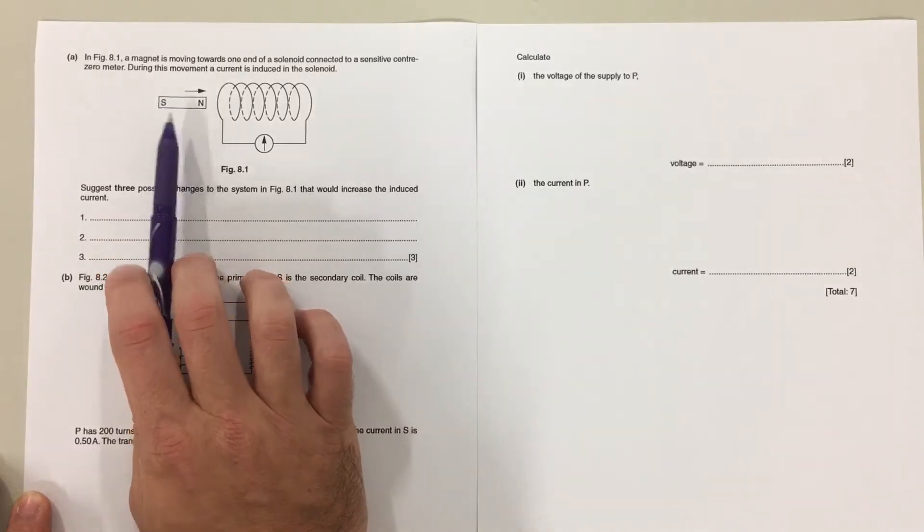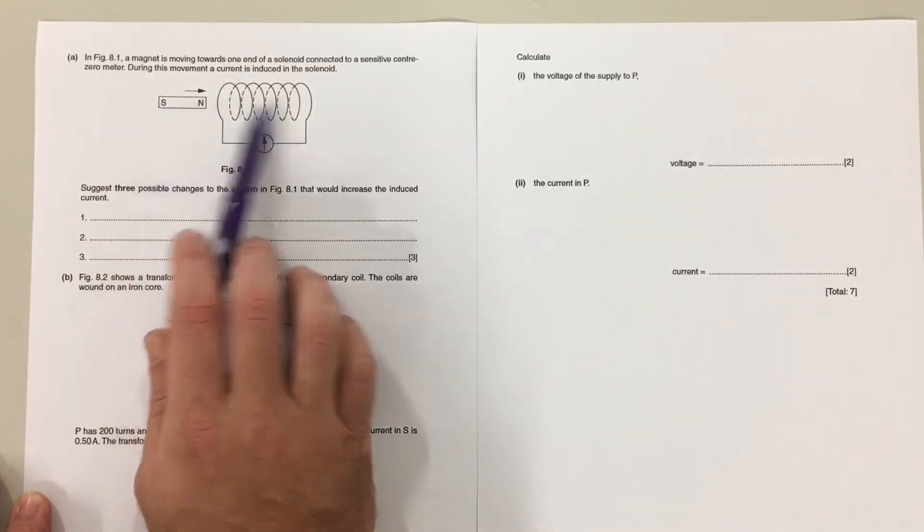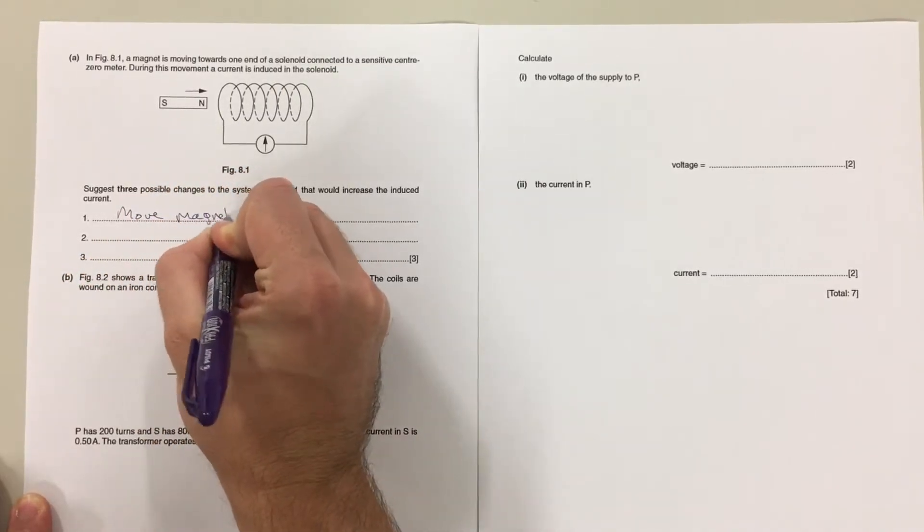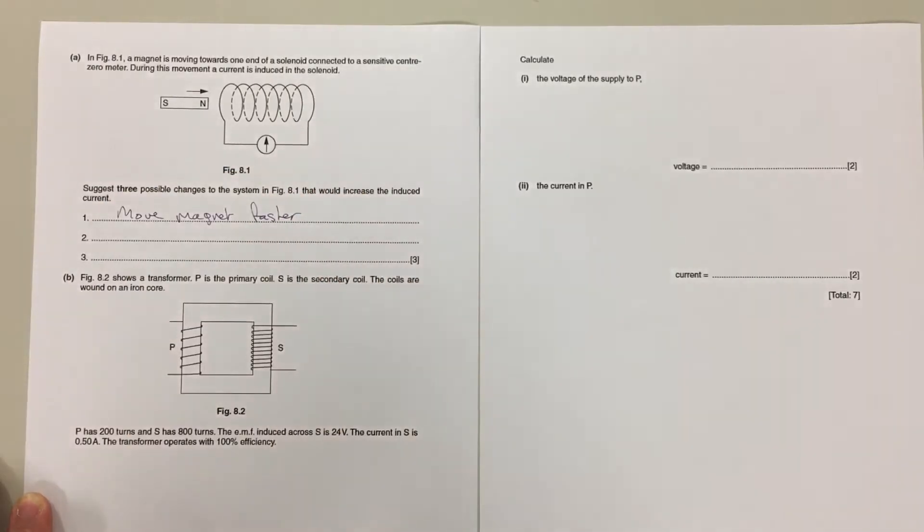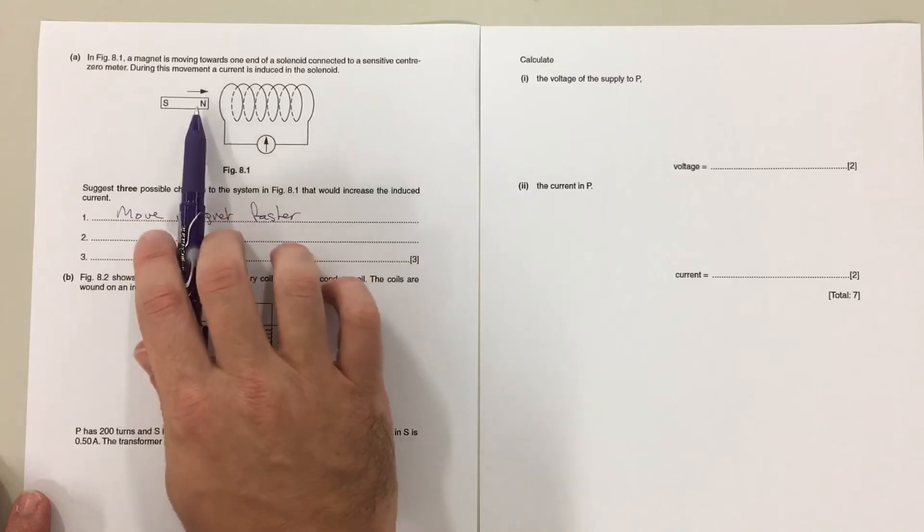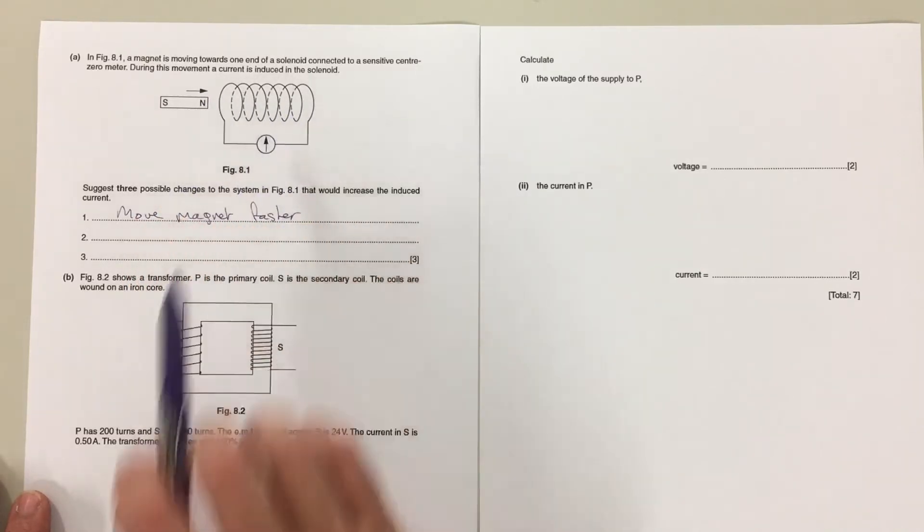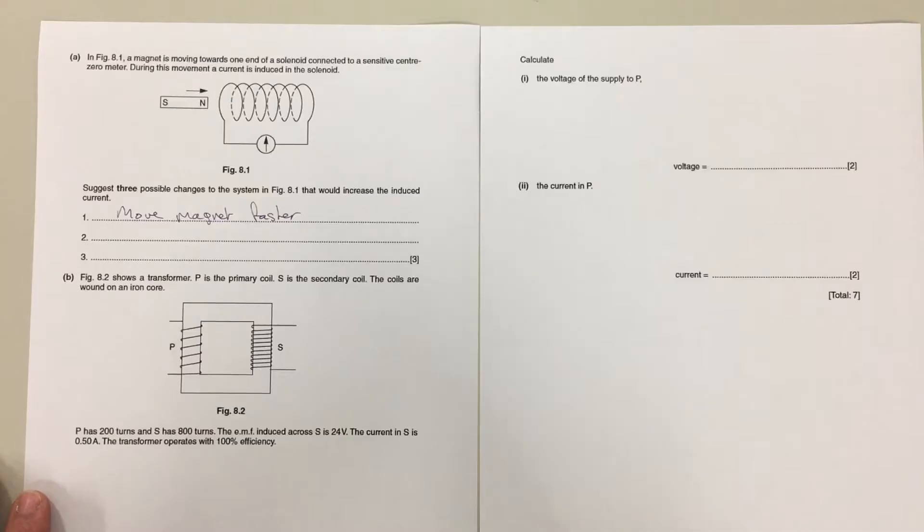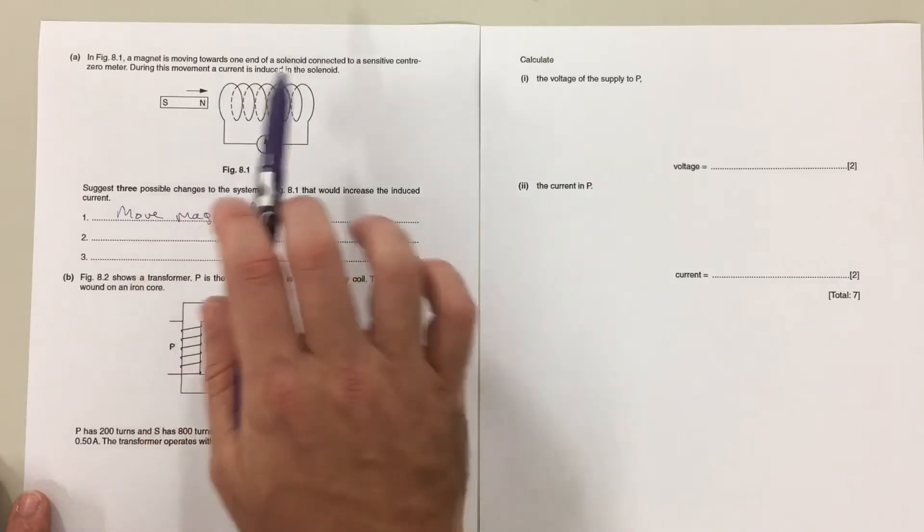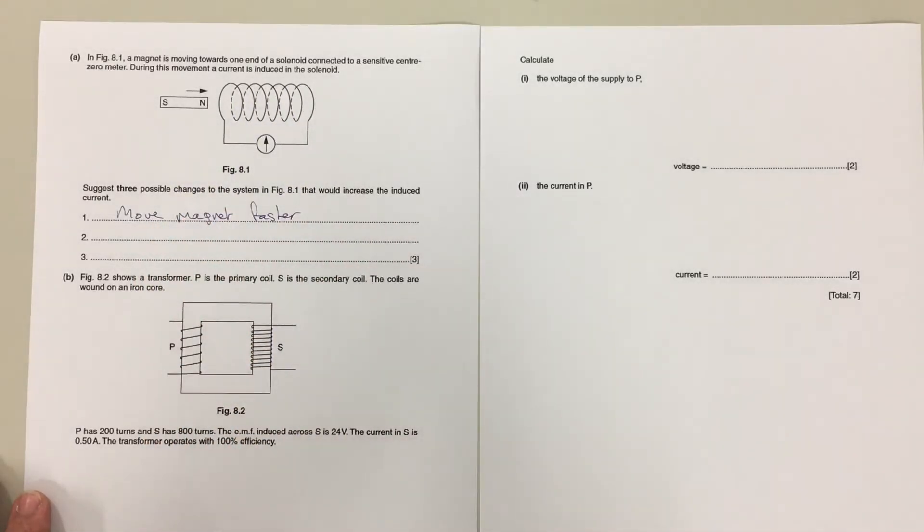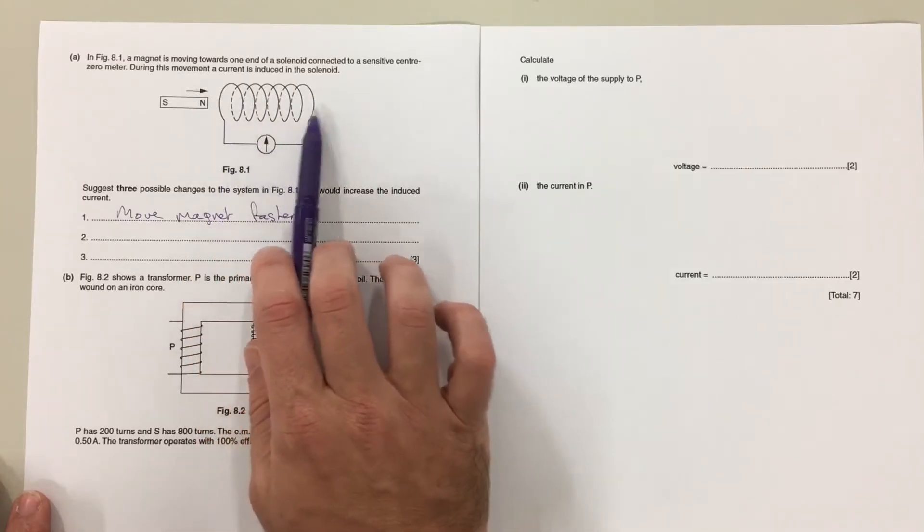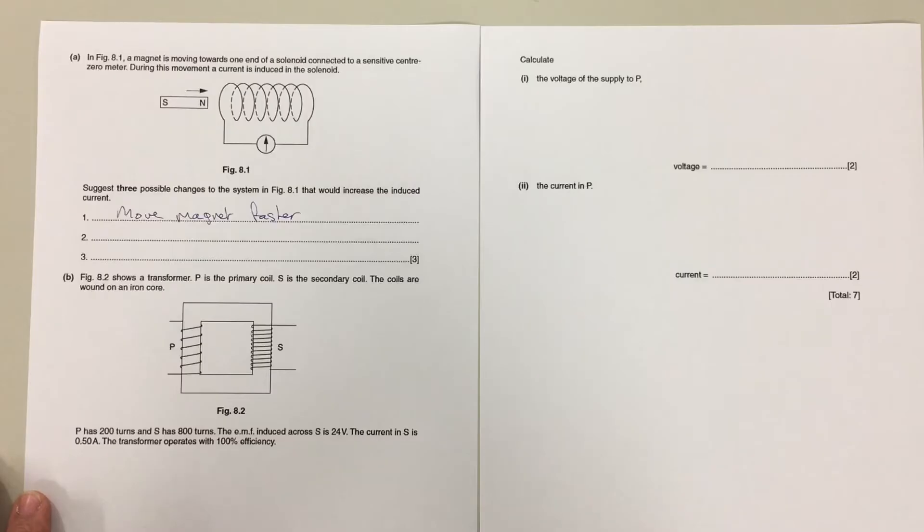So first of all you could increase the induced current by making the magnet move faster. The faster it moves the more current is induced. Secondly, if you think about the magnet having a force on each one of the electrons in the wire, if you have that force on more electrons then you're going to create a bigger current because the same force is acting on more electrons so more electrons are moving through the circuit. So what we've got here is a certain number of coils. If you add more coils then you're adding more electrons and so you're increasing the current. So we could add more coils.